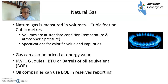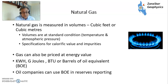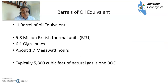Moving to natural gas — that's measured in volumes at standard conditions of temperature and atmospheric pressure, with specifications for calorific value and impurities. Some gases have nitrogen or CO2 impurities which reduce value if they can't be removed. Gas can also be priced at energy value: kilowatt hours, gigajoules, British thermal units, or barrels of oil equivalent. Oil companies tend to use BOE in reserves reporting, but a BOE isn't exactly a BOE in terms of price.